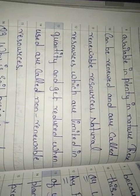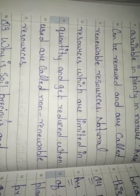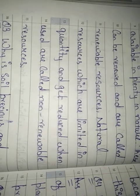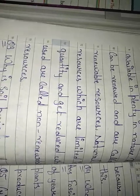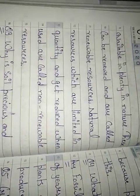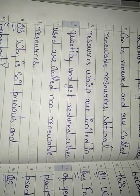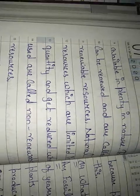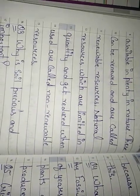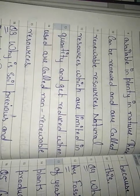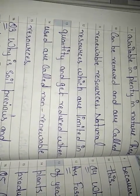Natural resources which are limited in quantity and get reduced when used are called non-renewable resources. Some natural resources such as coal, petroleum, minerals, and fossil fuels are limited in quantity. It takes millions of years to get them back, so these are precious resources that we need to use very carefully. These are non-renewable resources.